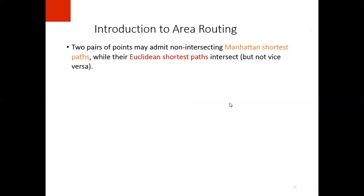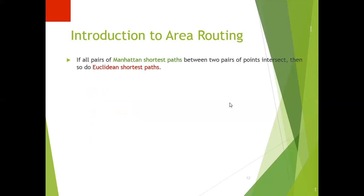Two pairs of points may admit non-intersecting Manhattan shortest paths while their Euclidean shortest paths intersect. When Euclidean shortest paths intersect, there may exist Manhattan shortest paths that do not intersect. In this example we can see the Euclidean shortest paths are intersecting but Manhattan shortest paths are not.